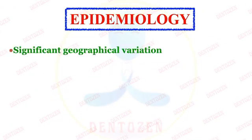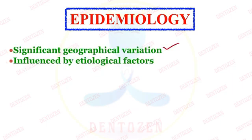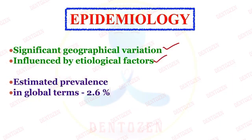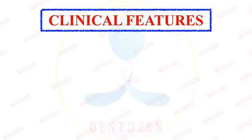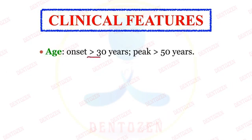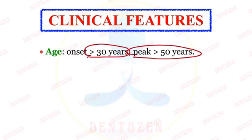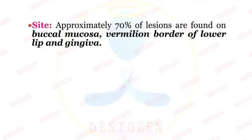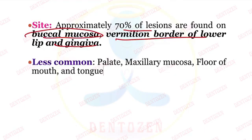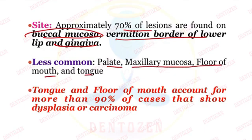Now epidemiology. There is significant geographical variation in leukoplakia, influenced by etiological factors. The estimated global prevalence is 2.6%, and 3% in developed countries. Clinical features: age of onset is more than 30 years, with a peak above 50 years. Males are more commonly affected than females — strong male predominance in India, approaching a nearly 1:1 ratio in the West. Most lesions are seen in the buccal mucosa, vermilion border of the lower lip, and gingiva. Less common sites are the palate, maxillary mucosa, floor of the mouth, and tongue.